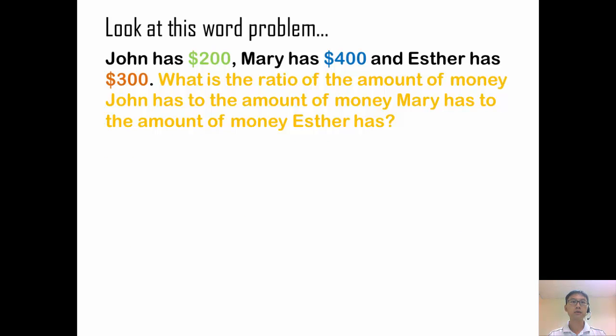Now let's look at a word problem. John has $200, Mary has even more, she has $400, Esther has $300. So the question is asking what is the ratio of the amount of money John has to the amount of money Mary has to the amount of money that Esther has. So now we are comparing these three people, John, Mary and Esther. So this is what we're comparing.